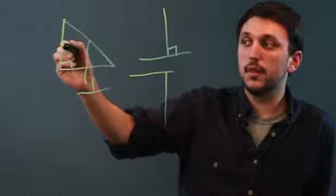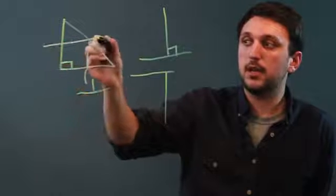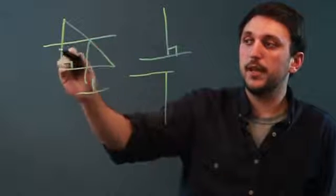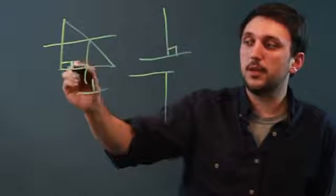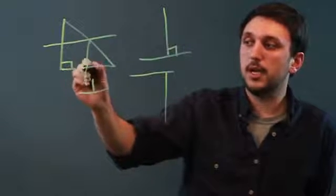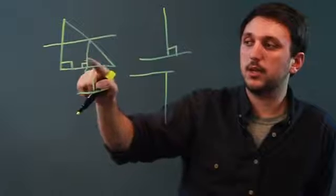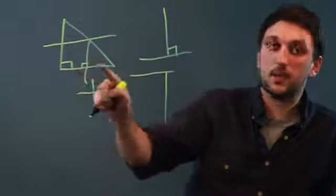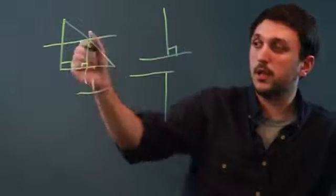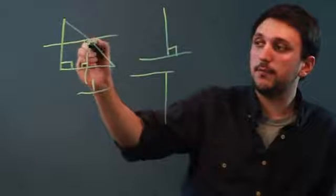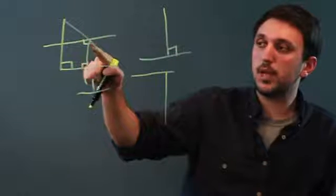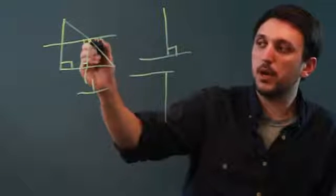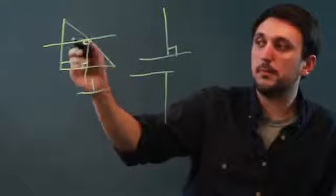and then draw a line bisecting this line, and by doing that we have a line that is parallel to this line. We have this line, which is parallel to this line, and they form a 90 degree angle at the midpoint of the hypotenuse.